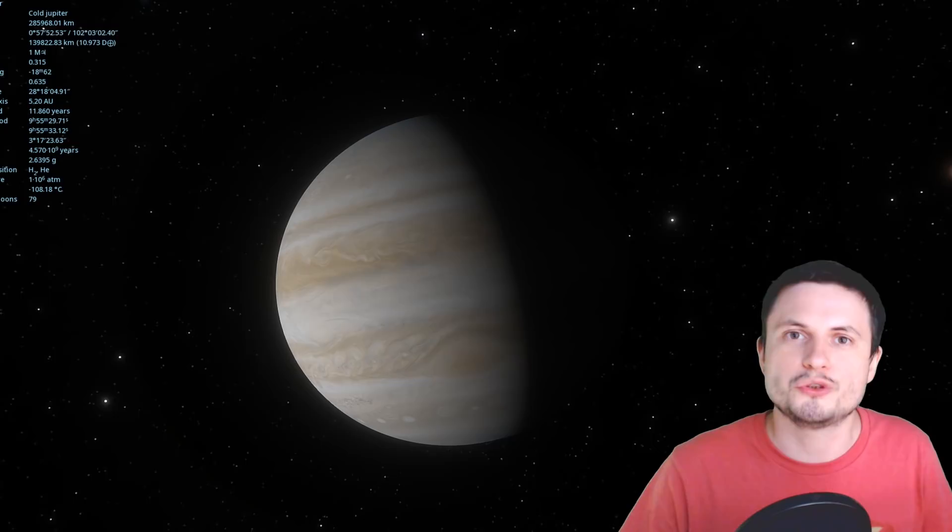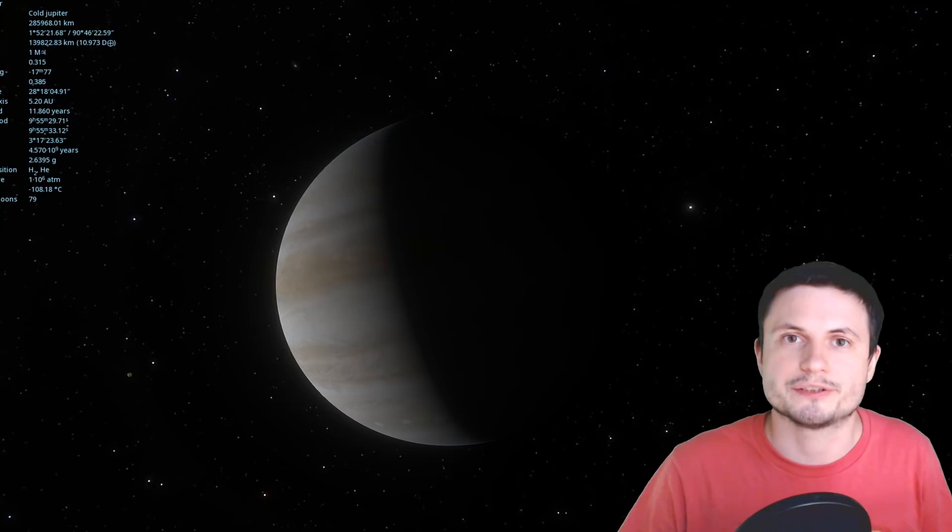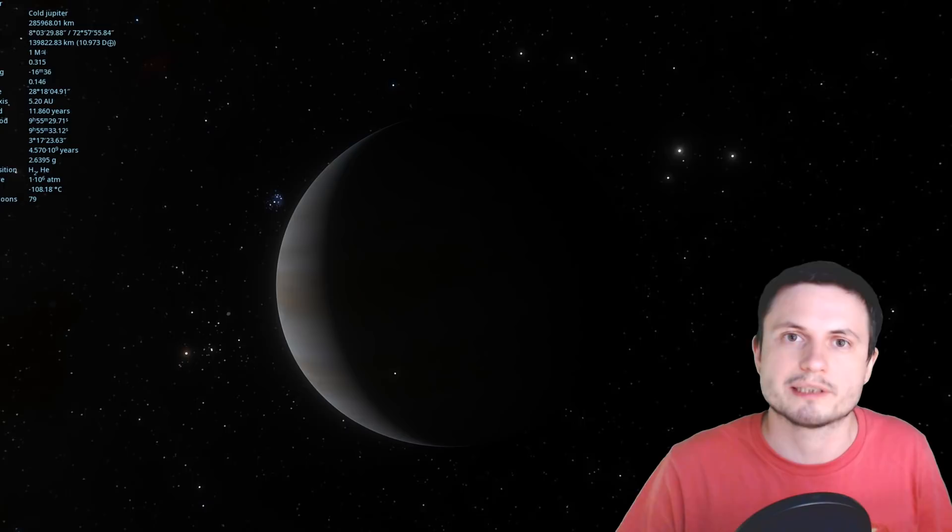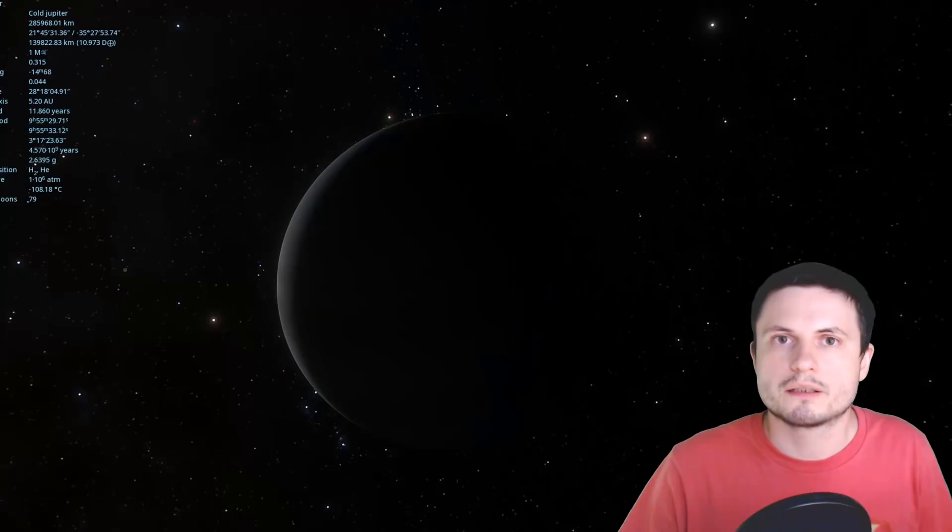Which is why we're never going to be able to use solar sails to, quote, sail the solar system. It might be possible closer to the Sun, we might be able to reach objects like Venus and Mercury using this technology. But right now,